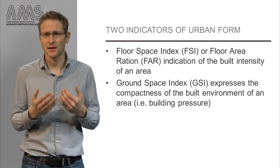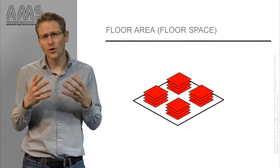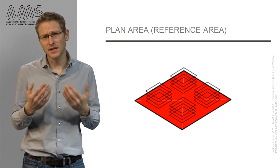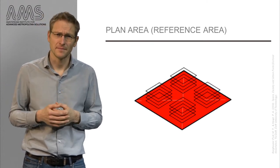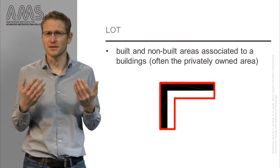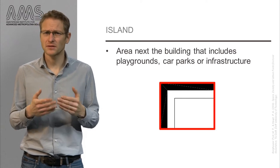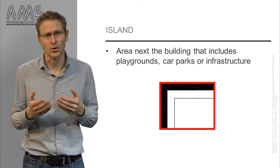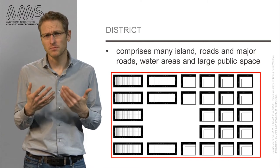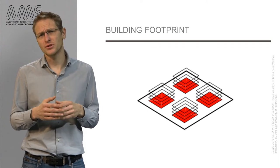Let's look at how these indicators are calculated. We first need to understand three key variables. Firstly, the floor area — the sum of the space available at all storeys of a building. Secondly, the plan area, or the reference area. This can be privately owned built and non-built areas associated with a building, such as the property on which a building is built — the so-called lot. But it can also be the area that includes playgrounds, car parks, or infrastructure — this is called the island or block. Or it can be a district, comprising many islands, roads, major roads, water areas, and large public space. The third variable is the building footprint — the area on which the building is built.